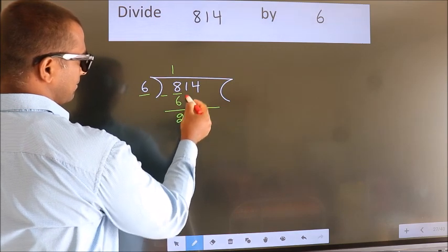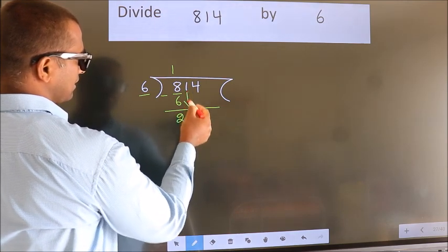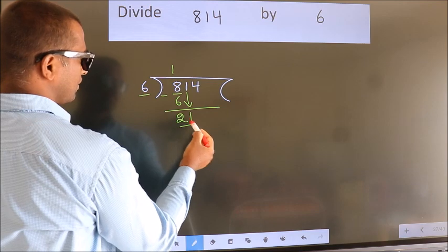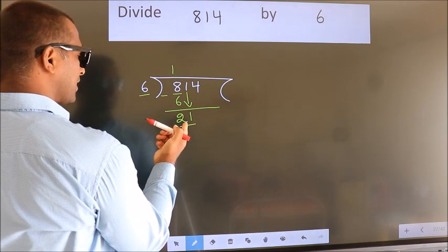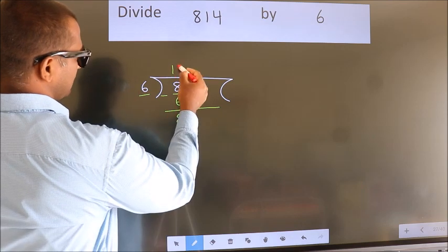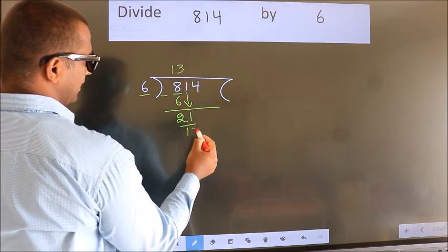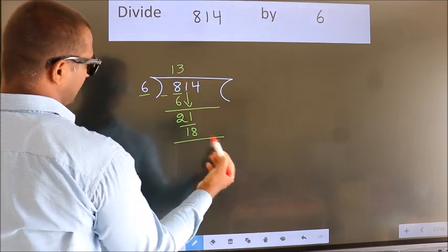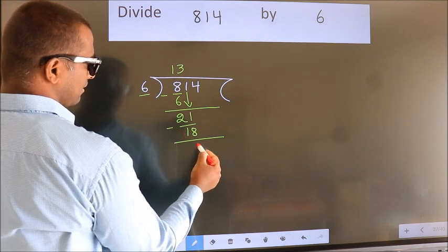After this, bring down the beside number. So, 1 down. So, 21. A number close to 21 in 6 table is 6 3s, 18. Now, we subtract. We get 3.